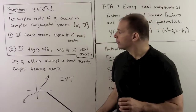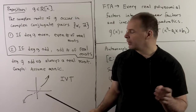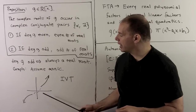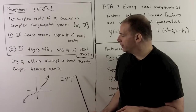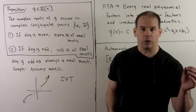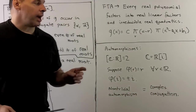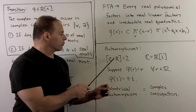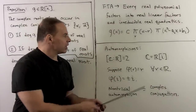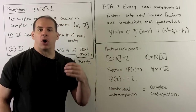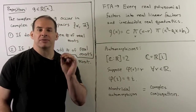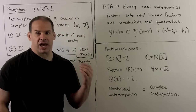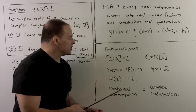We can see this geometrically: a monic polynomial of odd degree goes to +∞ as x → +∞ and to −∞ as x → −∞, so by the Intermediate Value Theorem it must cross the x-axis, giving a real root. To recast this in terms of automorphisms: the degree of ℂ over ℝ is 2. Since ℂ = ℝ(i), any automorphism of ℂ fixing ℝ is determined by where i goes. Checking the properties, the only possibilities are φ(i) = ±i, so the unique non-trivial automorphism is complex conjugation.